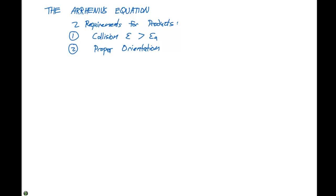This video we're going to talk about the Arrhenius equation. From the previous two videos, we know that there are two requirements for products. Number one, the collision energy must be greater than the energy of activation. And the second thing is we must have proper orientation.